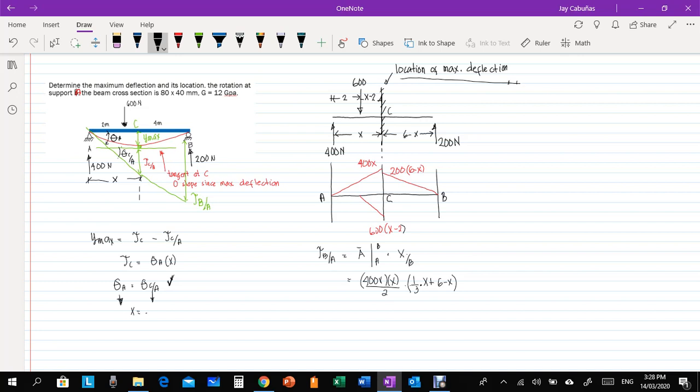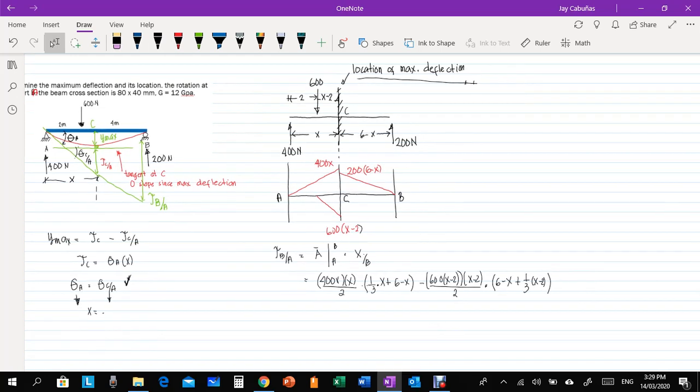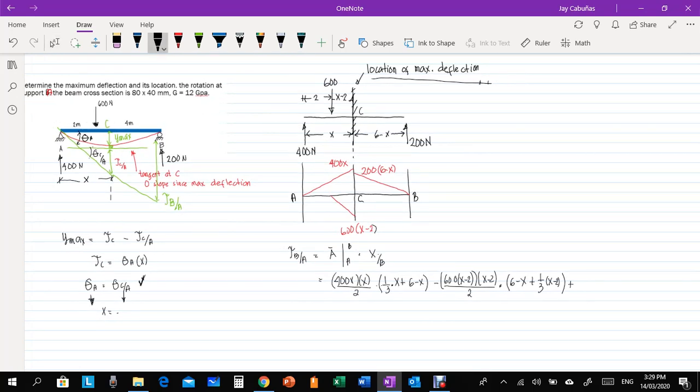The next, we have minus the negative area 600 X minus 2 times the base X minus 2 over 2 times the centroid that is 6 minus X plus 1 third of X minus 2. Okay, next, we have plus this area, that is 200 times 6 minus X times 6 minus X the base over 2 times centroid from B that is 2 third of 6 minus X. So, if we simplify that, that is 200 X squared,